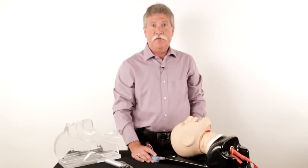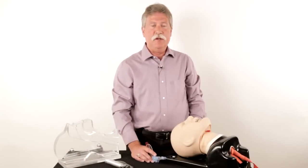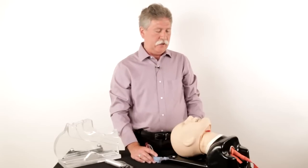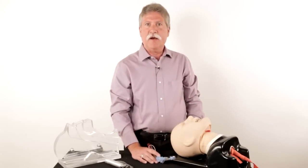There are essentially three key aspects in the use of the King Airway. The first is the actual insertion into the mouth and getting it around the base of the tongue and getting it towards the esophagus.